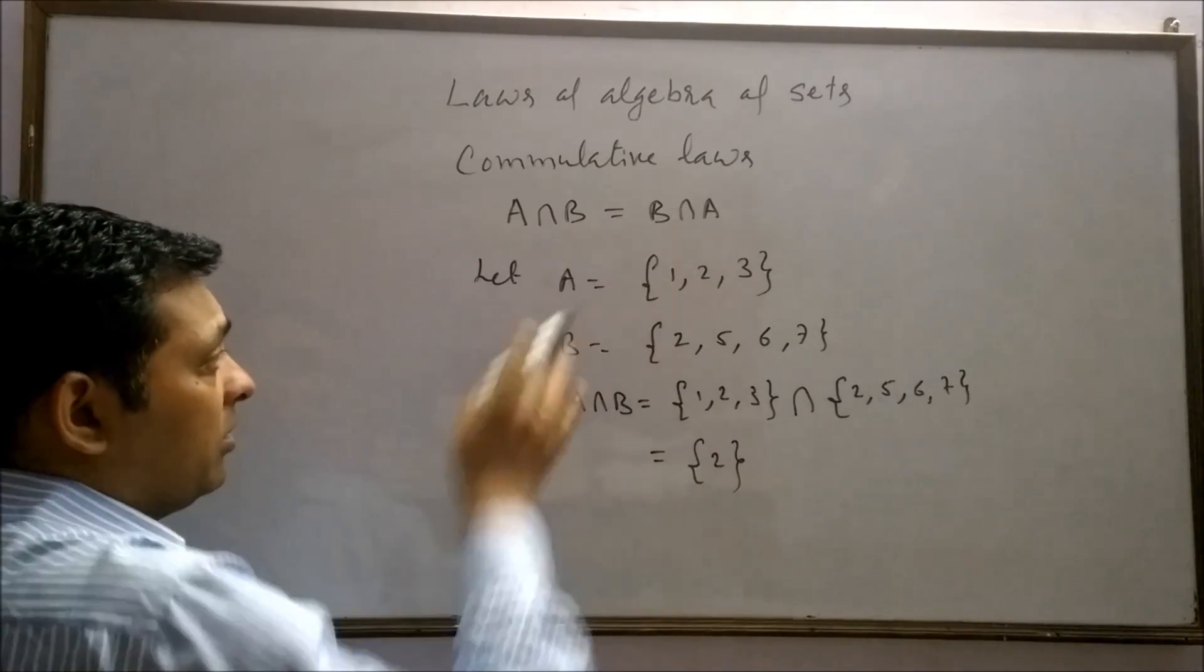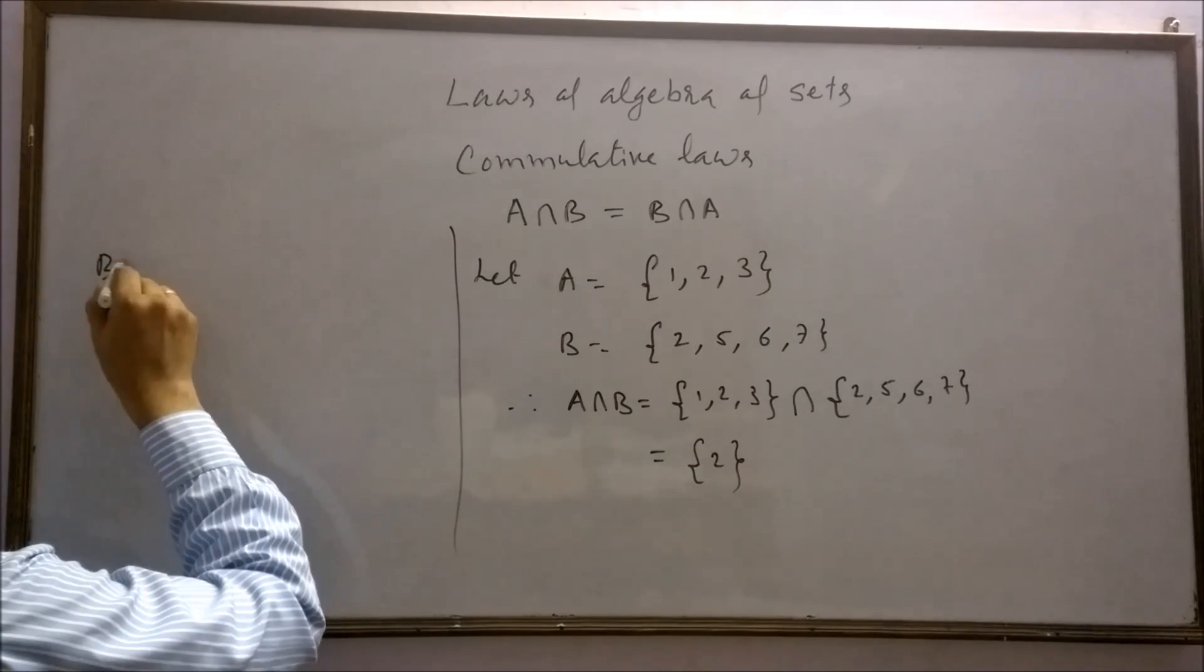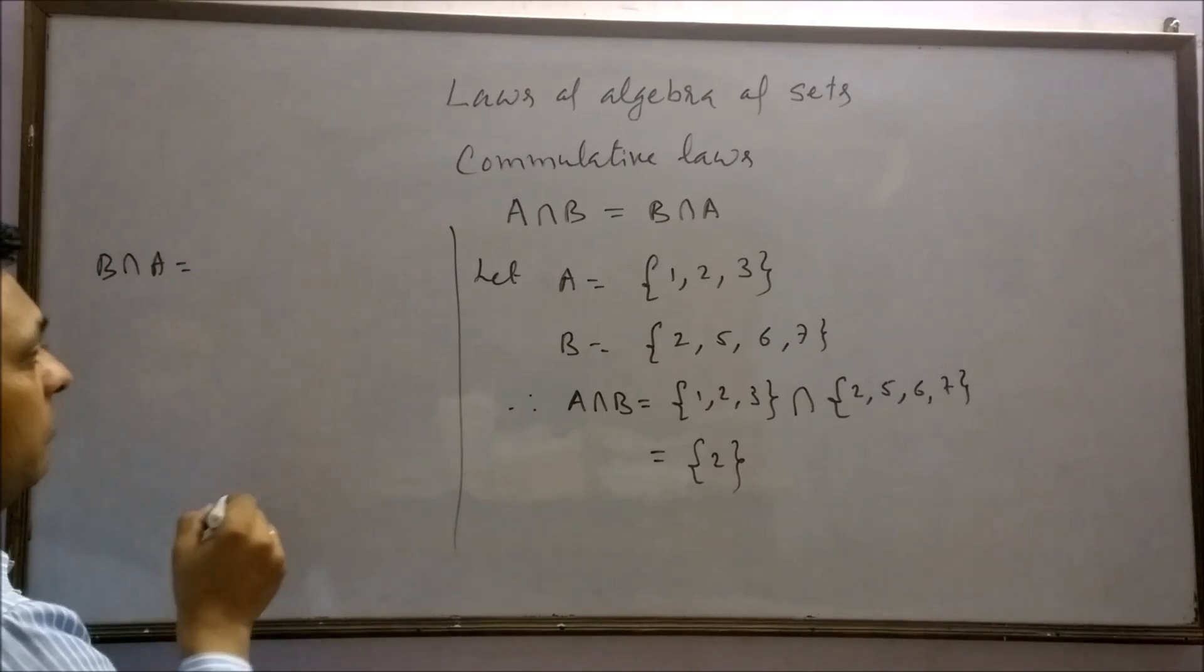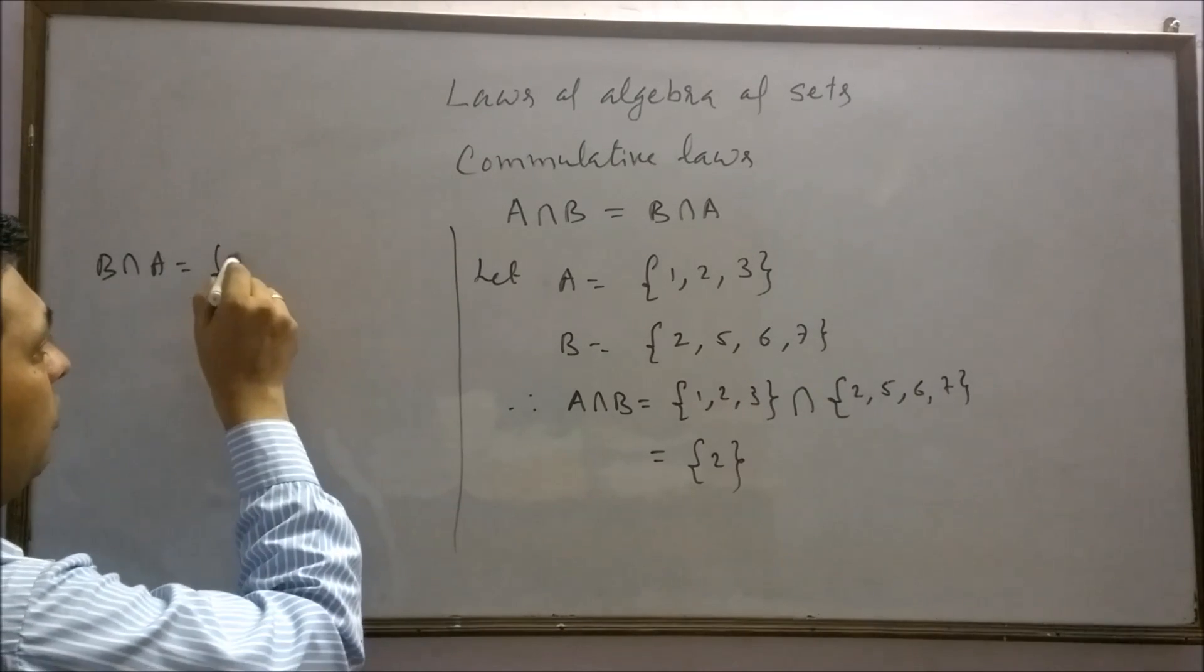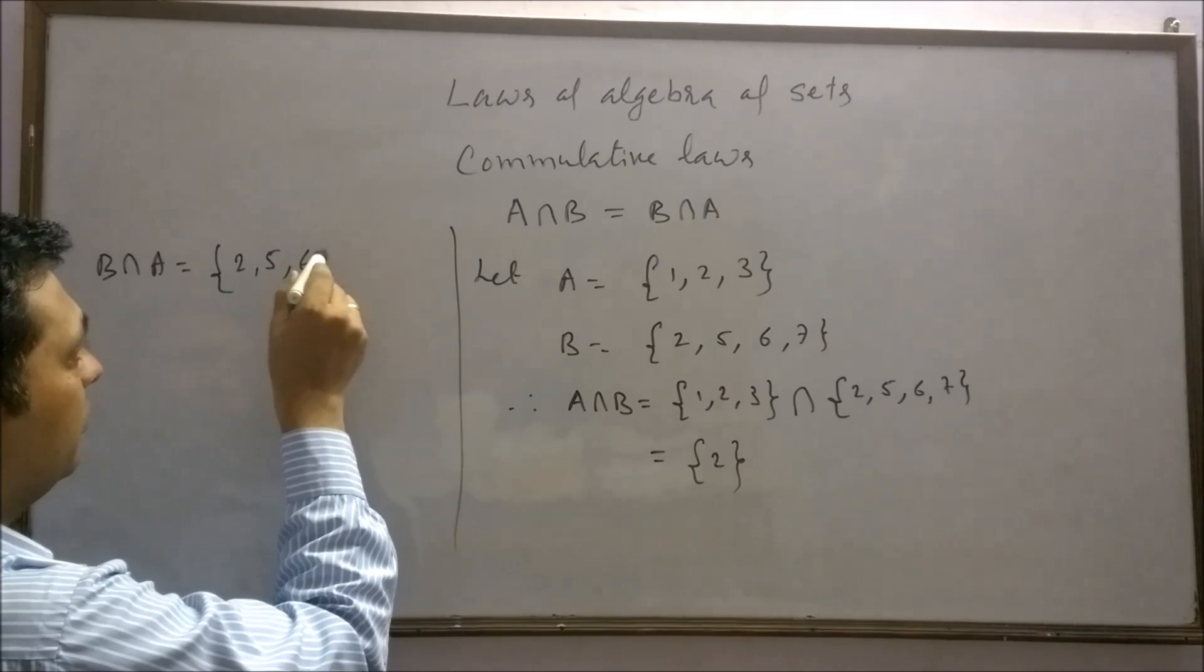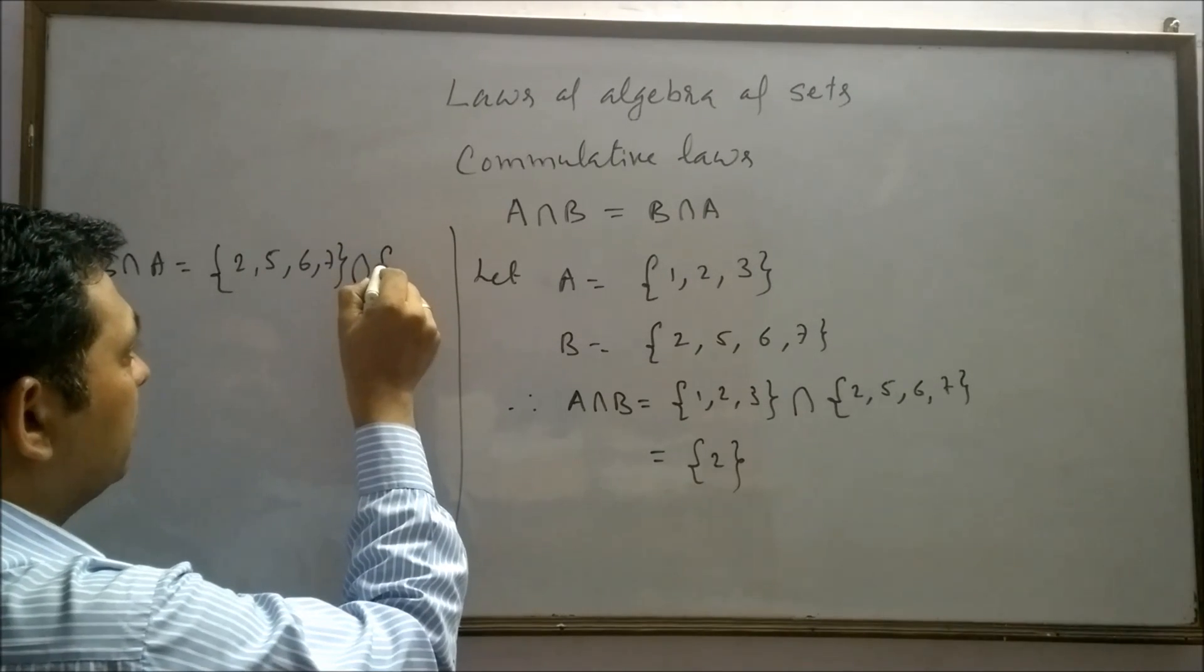In similar manner, we can find B intersection A. B intersection A means B is containing {2, 5, 6, 7} elements. A contains the first 3 natural numbers.